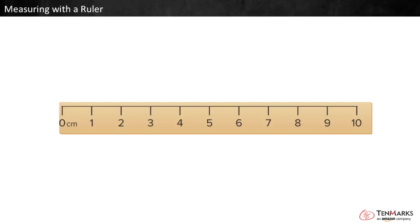We can measure the length of objects using tools. This ruler is marked in centimeters. Each space on the ruler is one centimeter long. The numbers tell how many spaces there are between that point on the ruler and zero.